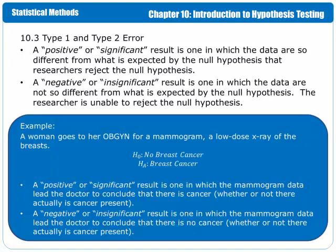A positive or significant result is one in which the data are so different from what is expected by the null hypothesis that the researchers reject the null hypothesis. A negative or insignificant result is one in which the data are not so different from what is expected by the null hypothesis. The researcher is unable to reject the null hypothesis in such a case.